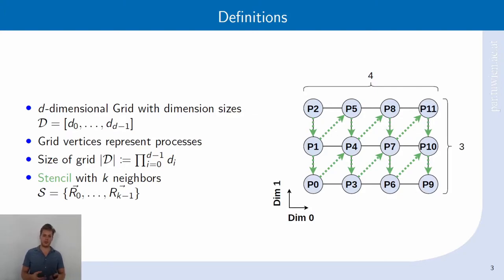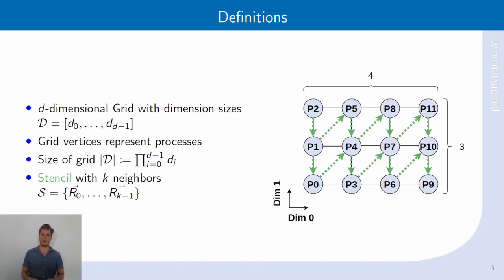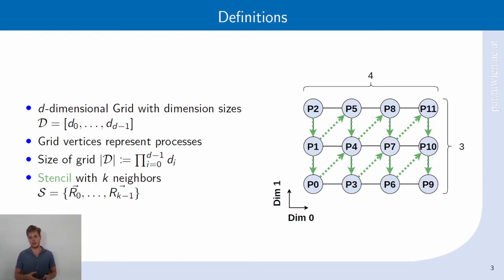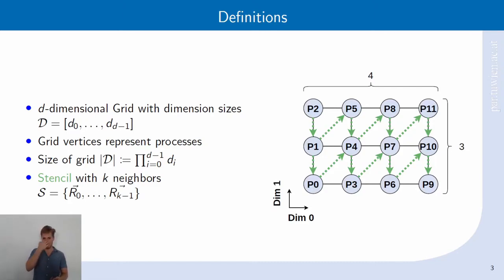It is only natural to assume that with such a grid, we can introduce structured or local communication patterns. Think, for example, of partial differential equation solvers that use a finite difference technique to approximate continuous space. In such a case, we could use a stencil with k neighbors, where k is the number of communication partners per process. Since we are already talking about coordinates, we can also specify these k communication neighbors with vectors that describe the relative position in the grid — the relative offset per dimension.